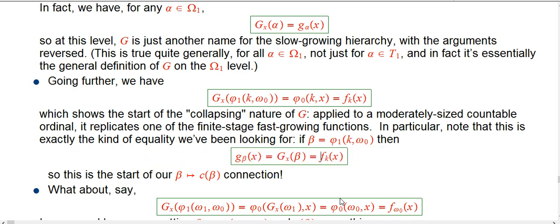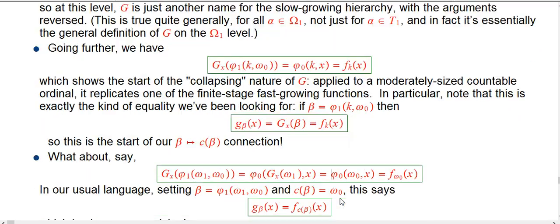So that's an example of a G function with a certain argument, namely beta, corresponding exactly, no approximations necessary, to an f function with a smaller argument, namely just the number k. And so the rest of the story is really just seeing what happens in a little more generality with that.